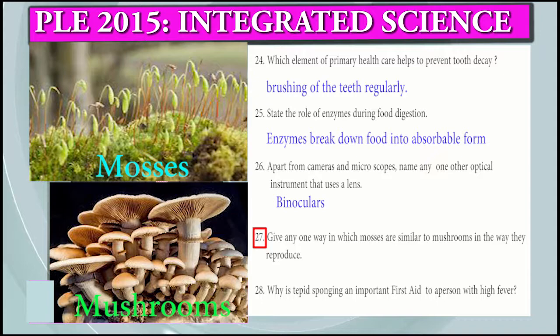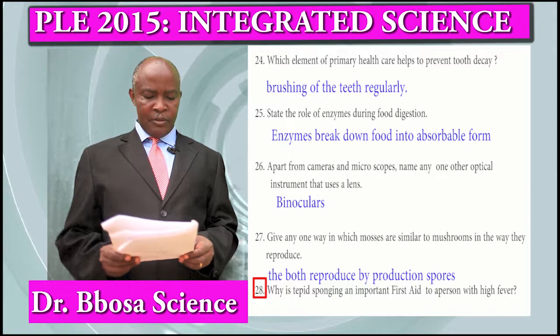Question 27: Give one way in which mosses are similar to mushrooms in the way they reproduce. Mosses and mushrooms reproduce by production of spores.